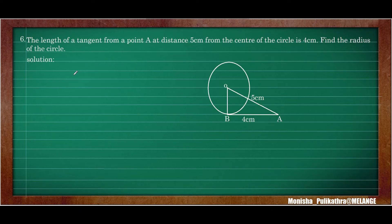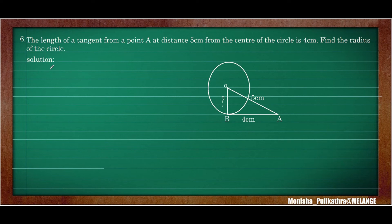The sixth question: The length of a tangent from a point A at a distance 5 cm from the center is 4 cm. Find the radius of the circle. In the diagram, tangent AB equals 4 cm, and hypotenuse OA equals 5 cm. We need to find radius OB. By theorem 4.1, the angle at the point of contact is 90 degrees, making it a right-angle triangle. We can apply Pythagoras theorem.